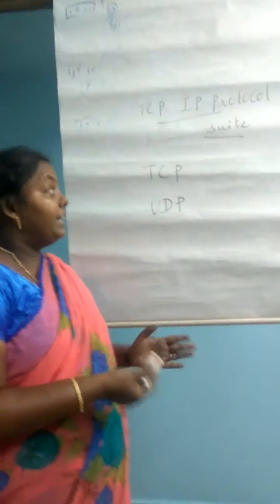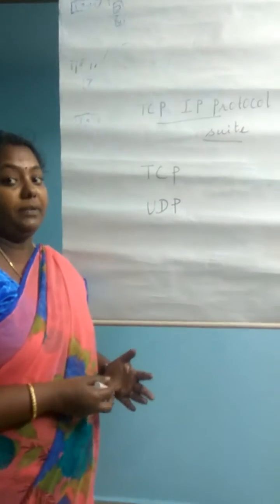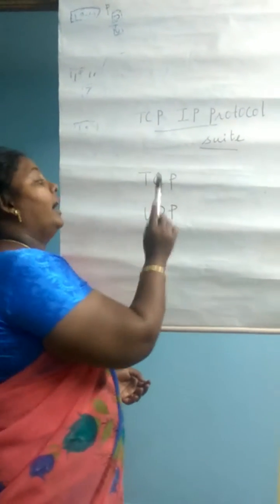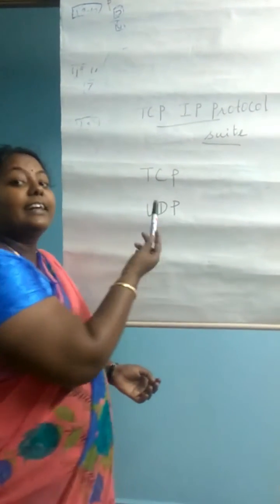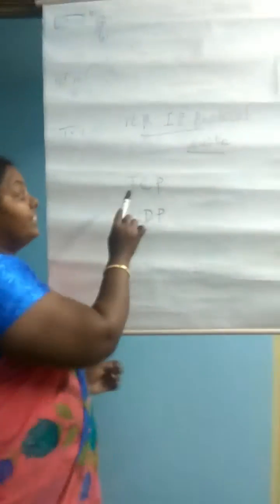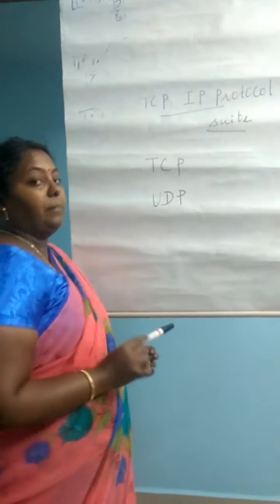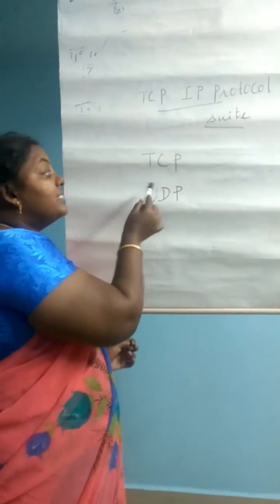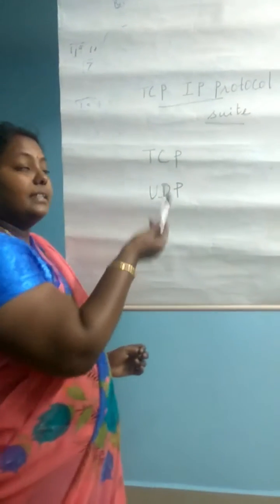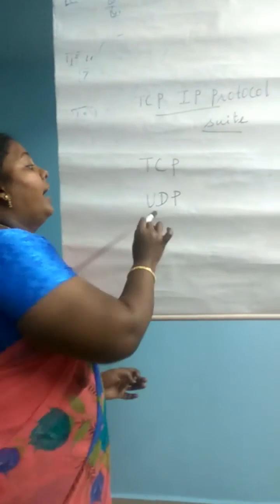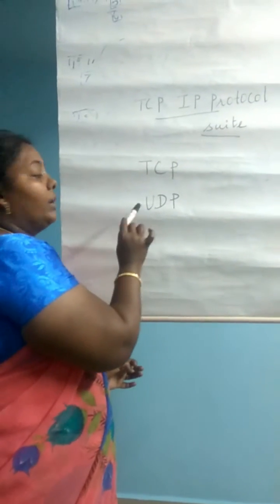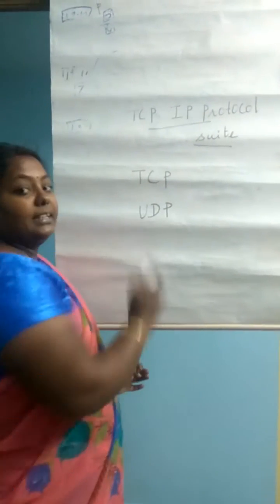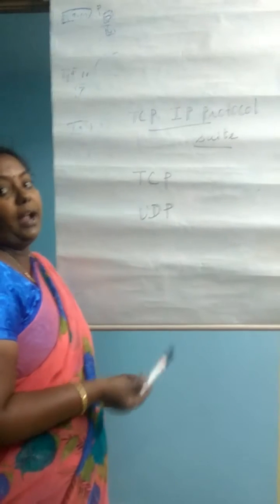There are many differences between TCP and UDP. TCP is a connection-oriented protocol and UDP is a connectionless protocol. TCP is reliable since it gets an acknowledgement, whereas UDP does not get an acknowledgement. These are the main differences between TCP and UDP.